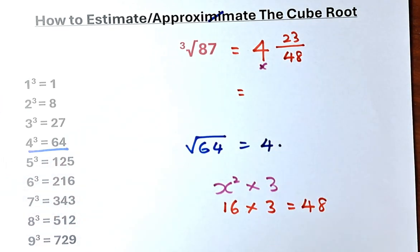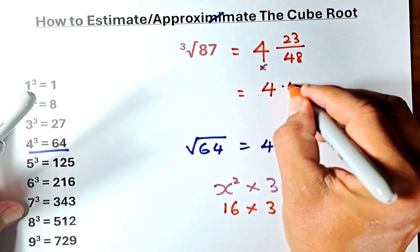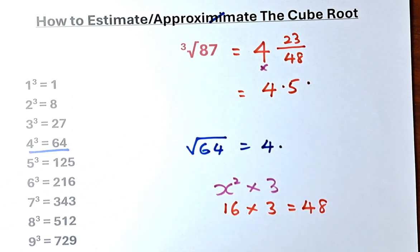4 and 23 over 48. Or if you want to put in decimal, 23 over 48 is close to 0.5 because 24 over 48 is 0.5. So we will say it's going to be 4.5. Have a check. It's quite close. It's not exactly because it's approximate and we shall do another example now.